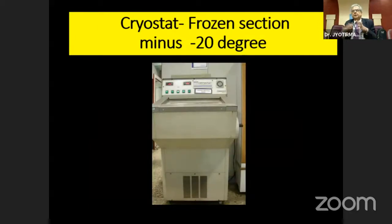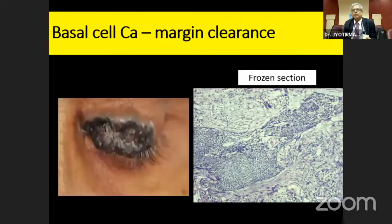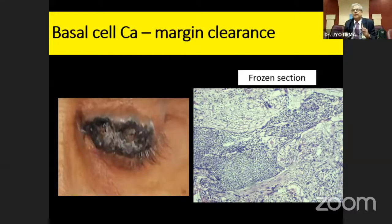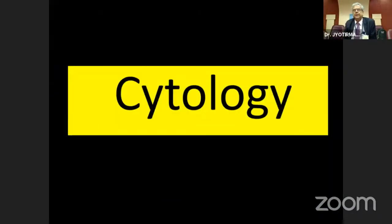In cryostat, we don't fix the tissue. We put it in frozen section at minus 20 degrees centigrade. We get staining of the tissues and can find out the margin clearance of a basal cell carcinoma, as seen in the picture.